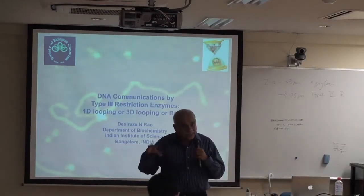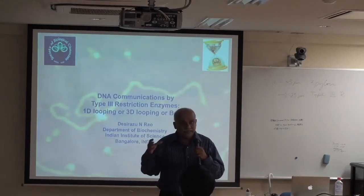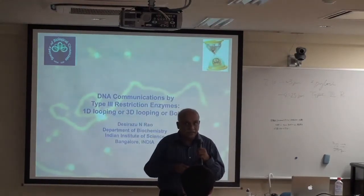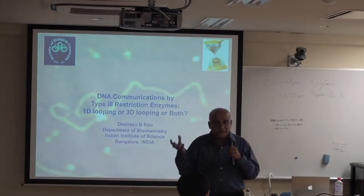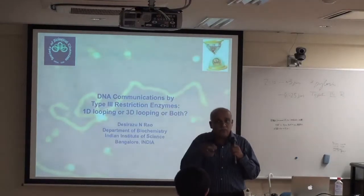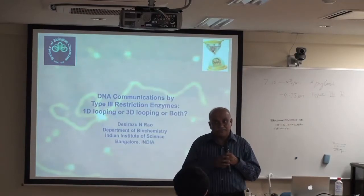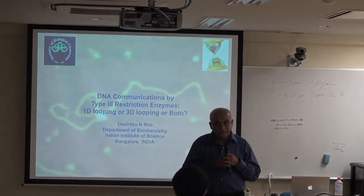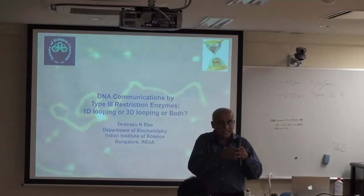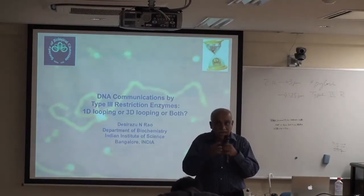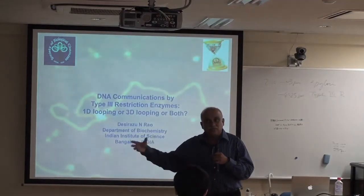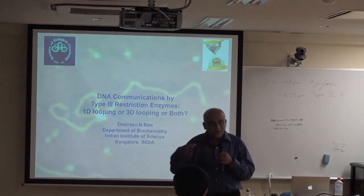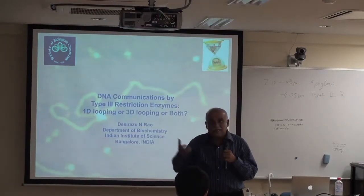In type 1 enzymes, there is a third subunit called the S subunit, which actually binds DNA. M and S together form the methyltransferase, called M2S1, and R2M2S1 forms the full restriction enzyme in type 1 enzymes. So you have R2M2S1 in type 1, R2M2 in type 3, and R alone in type 2 — for example, BamHI and EcoRI. This illustrates the organizational complexity.